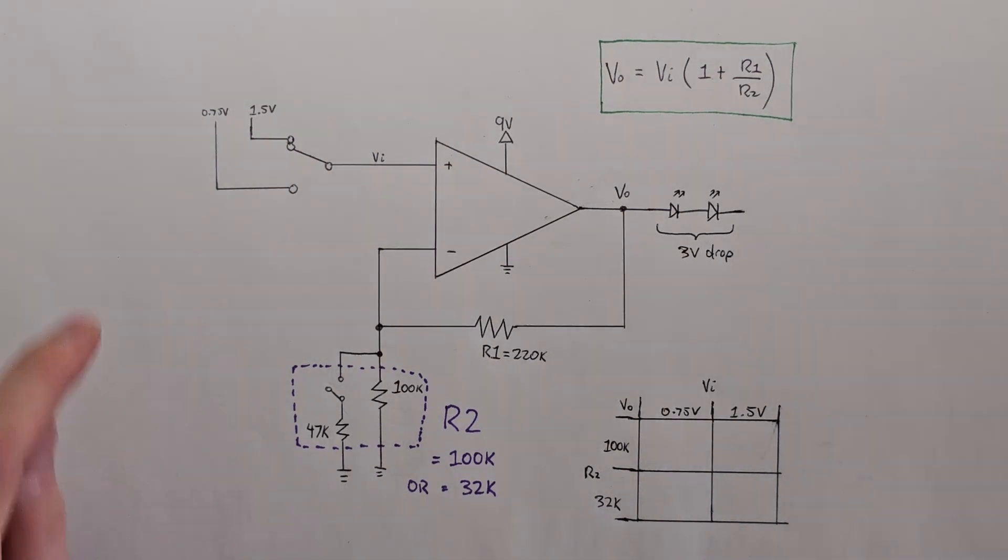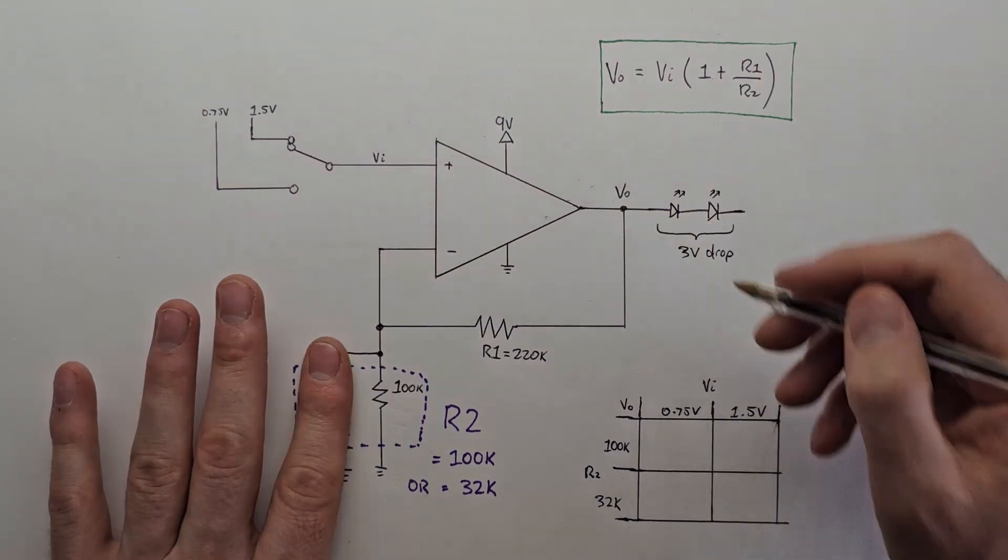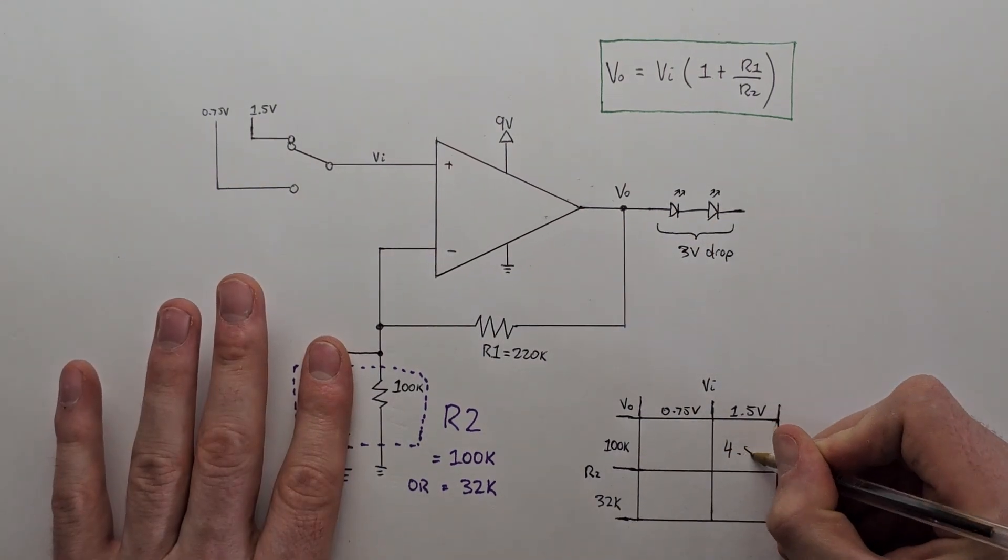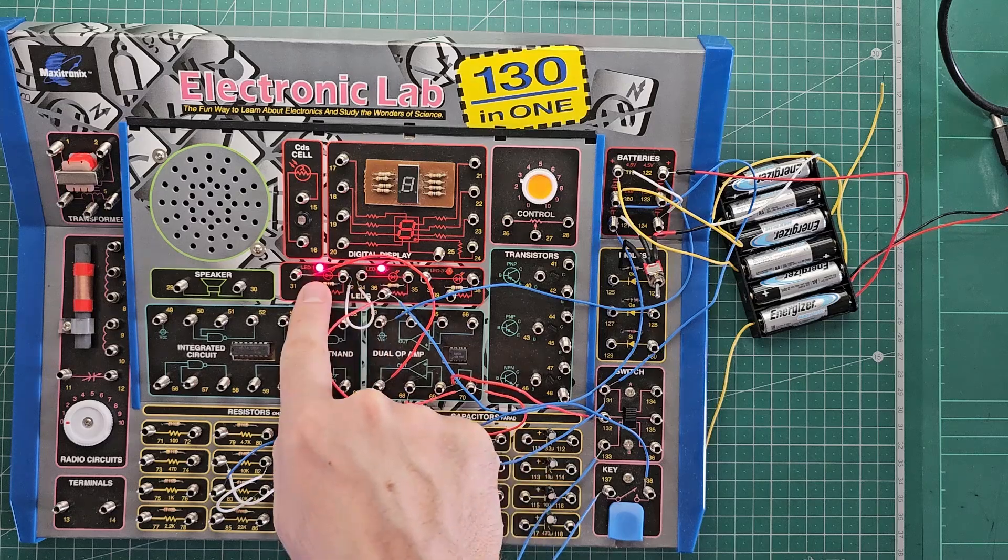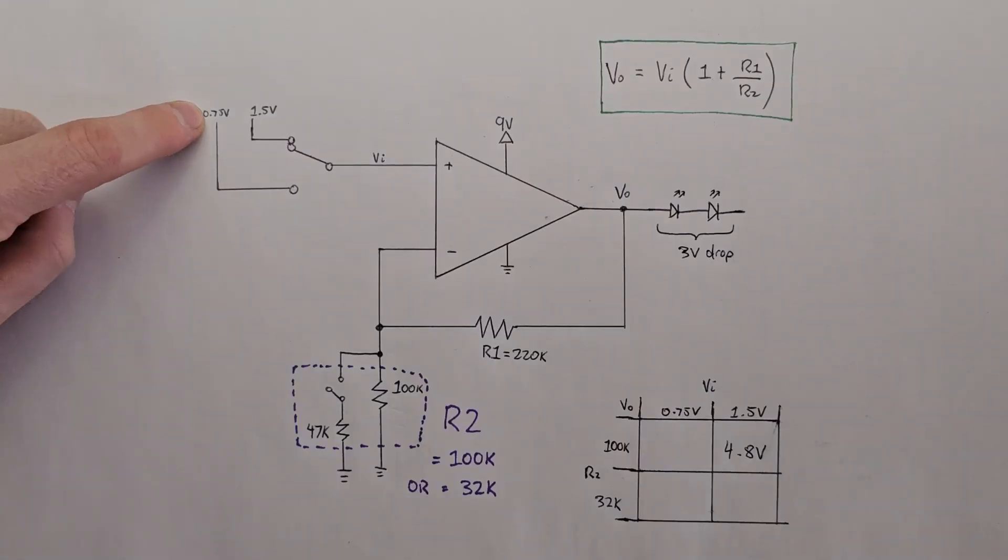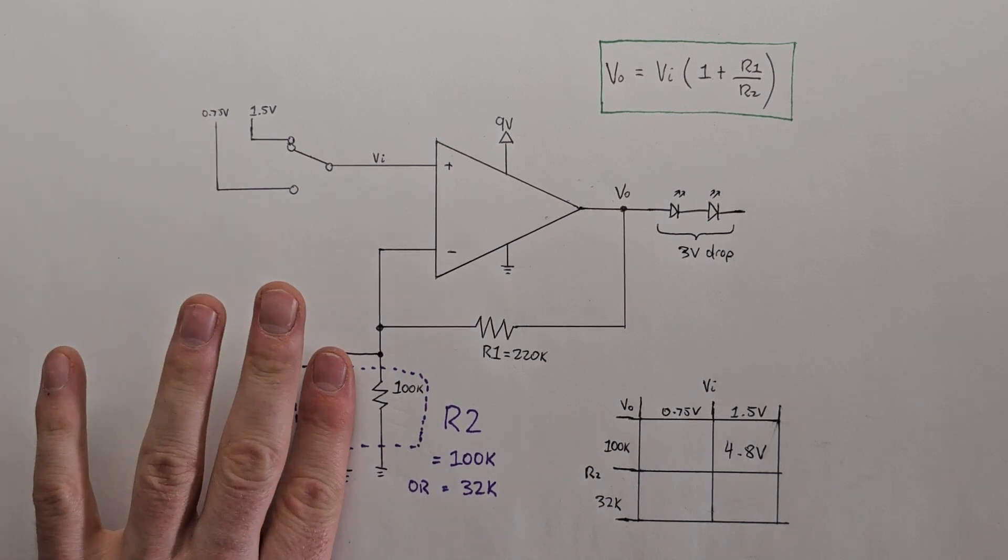So for example, if we have the input voltage at 1.5 volts and this resistance to ground at 100k, in other words this switch is open, then our output voltage is going to equal 4.8 volts, which is higher than 3 and is enough to turn on the LEDs. If we toggle the switch and make the input voltage 0.75 instead, but we keep this open, then the output voltage is halved down to 2.4 volts.